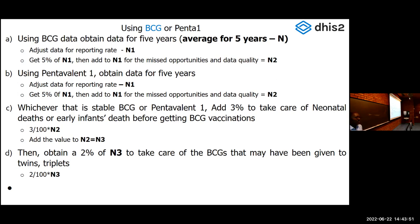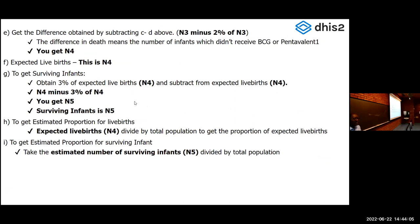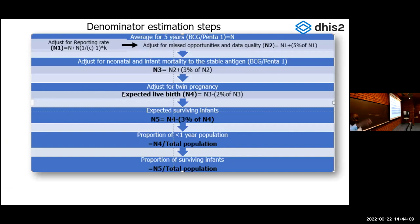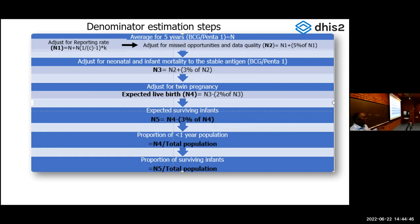We had a problem from the census — the real data — and a problem with our projected data. Our service delivery data was consistent with the projected data because we used to get good coverage percentages, but now it's inconsistent with the real data. So we thought: let's believe our service delivery data, adjust for it, put it in the system so we continue getting consistent percentages. The final question remains: what is the correct population data, and has DHIS2 been misleading us all these years?